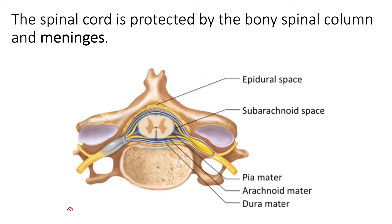In the subarachnoid space is where cerebrospinal fluid circulates. That cerebrospinal fluid, which originates in the ventricles of the brain, circulates throughout the brain and then around the brain and spinal cord in the subarachnoid space.